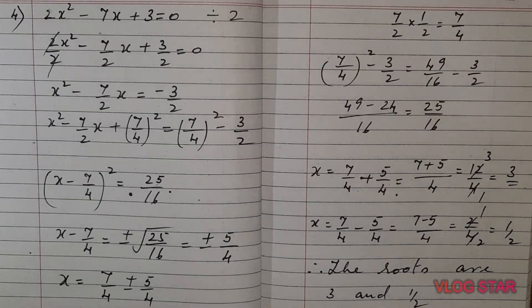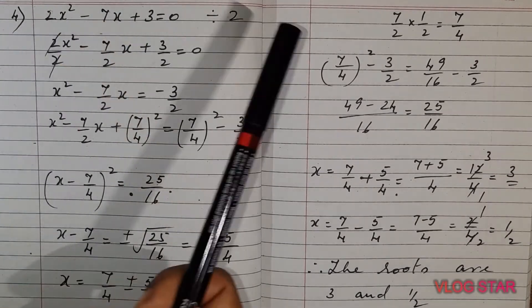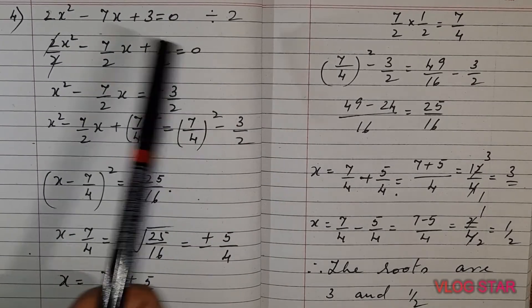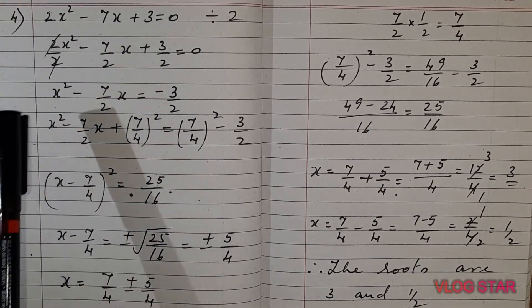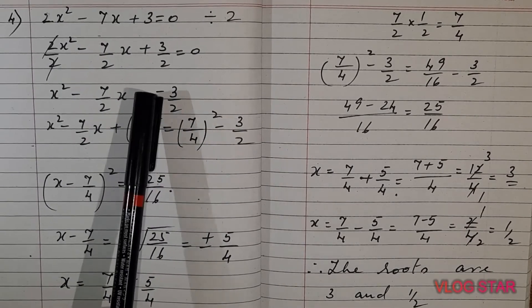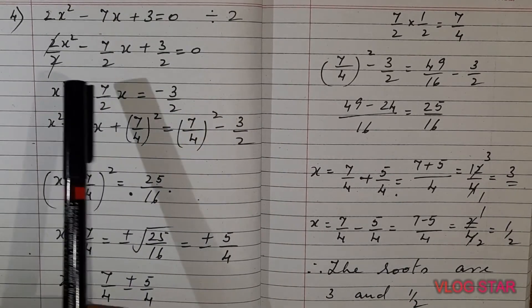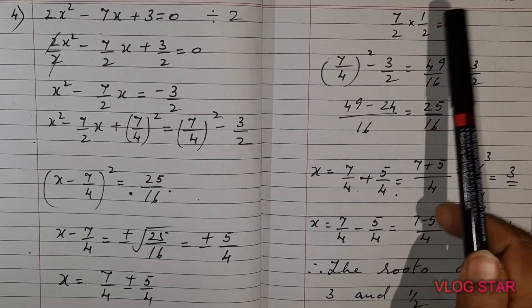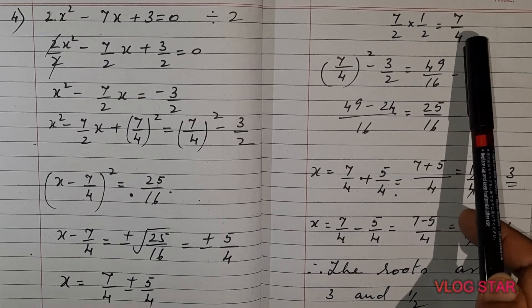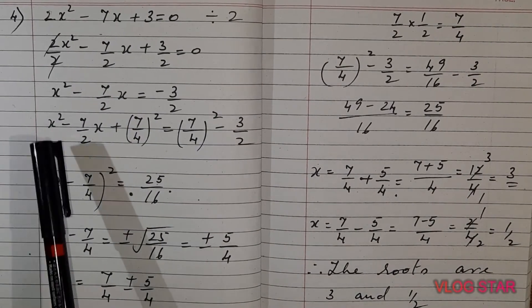Now let me take the next equation: 2x² - 7x + 3 = 0. The coefficient of x² is 2, so divide the whole equation by 2. So (2/2)x² - (7/2)x = 0. Cancel 2 and 2. What is remaining is x² - (7/2)x. The +3/2 goes to the right side and becomes -3/2. Then take the coefficient of x, which is 7/2, and multiply by half to get 7/4.